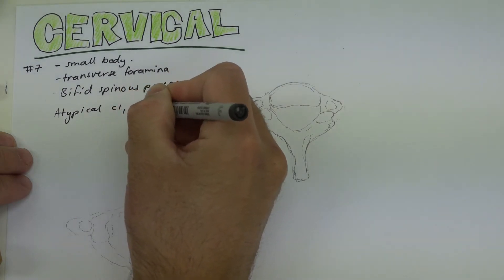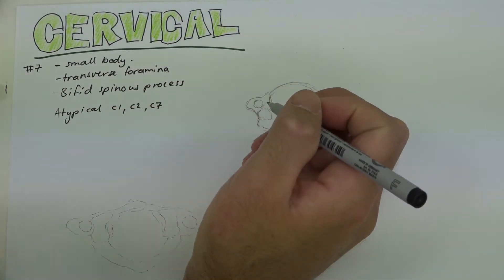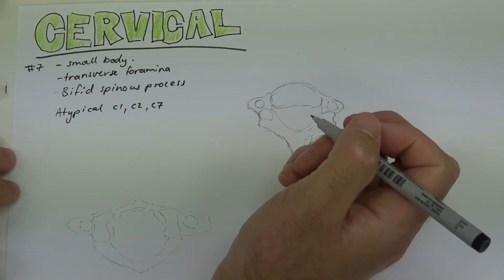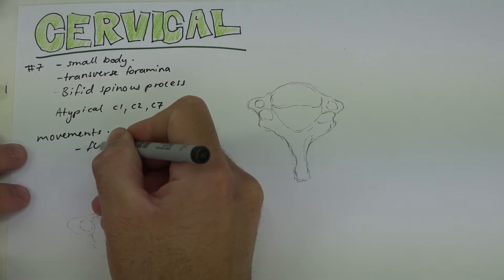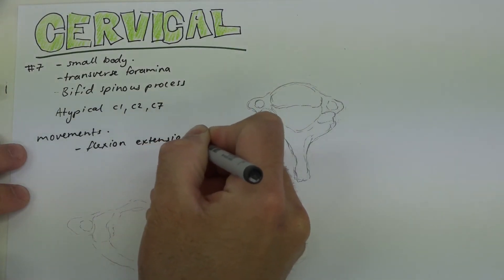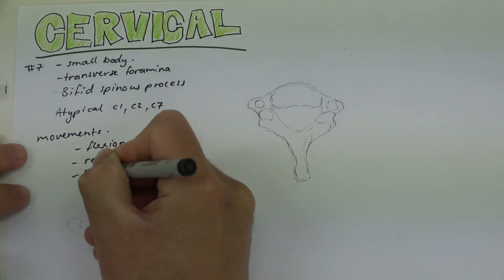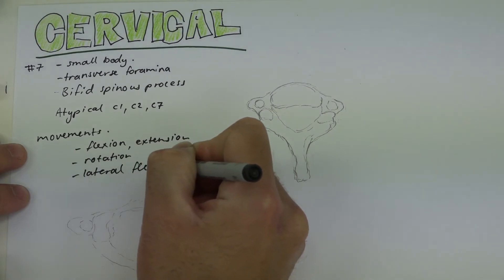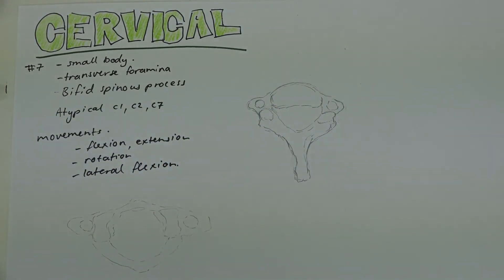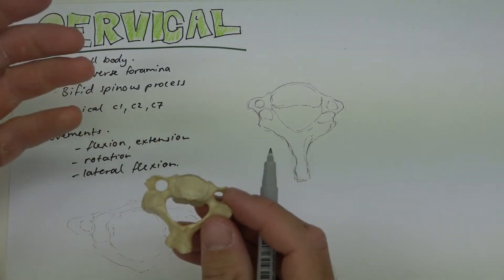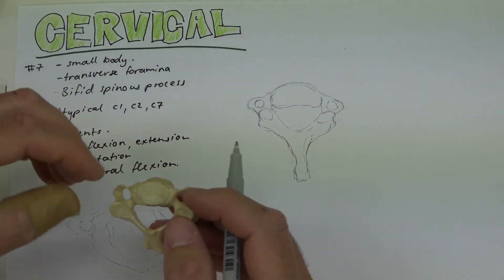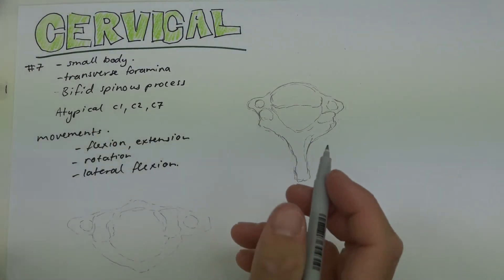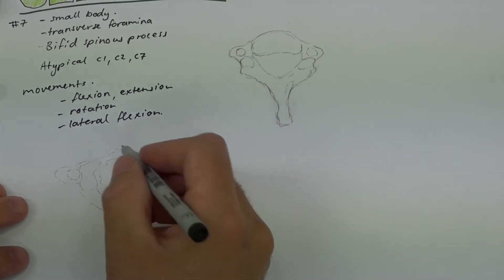The other four are typical vertebrae. The movements in the cervical vertebrae are flexion, extension, rotation, and lateral flexion — quite a mobile area of the vertebral column, obviously there to support your head. The bodies of the vertebrae aren't that large because they're not supporting much weight, whereas in the lumbar vertebrae the bodies are really big because they support a lot of body weight.